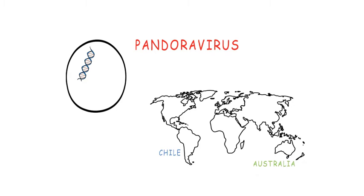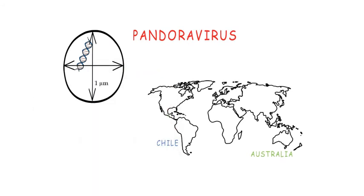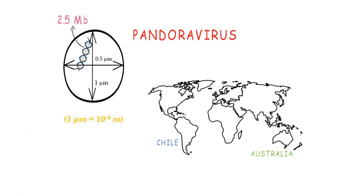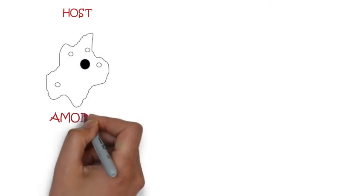These viruses are huge. They have been found to have particle size of 1 micrometer length and 0.5 micrometer diameter. The genome size is found to be about 2.5 megabase pairs. These viruses were found to infect some amoeba species.